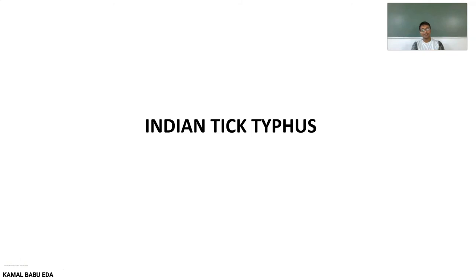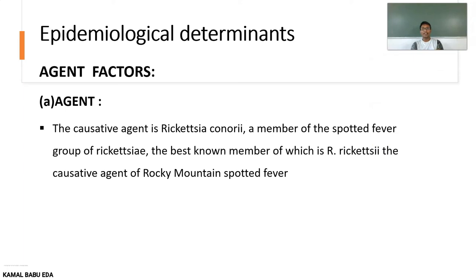The next type to discuss is Indian Tick Typhus. The agent factor is Rickettsia conorii, a member of the Spotted Fever group of rickettsia, and it is related to Rickettsia rickettsii — the best-known member and the causative agent for Rocky Mountain Spotted Fever.